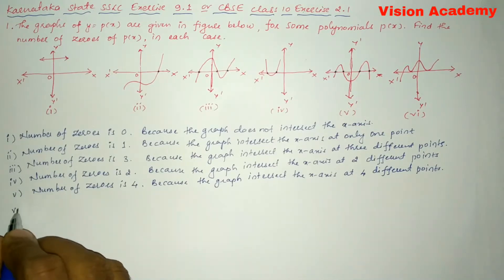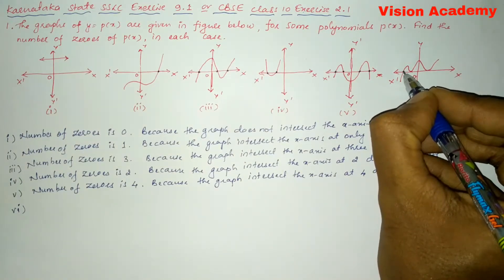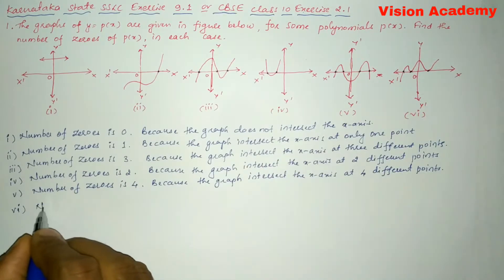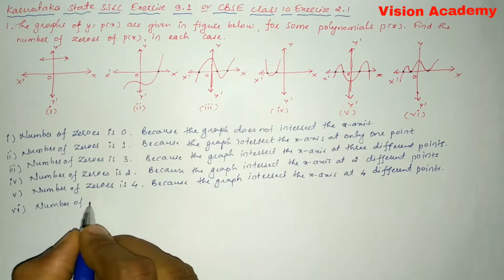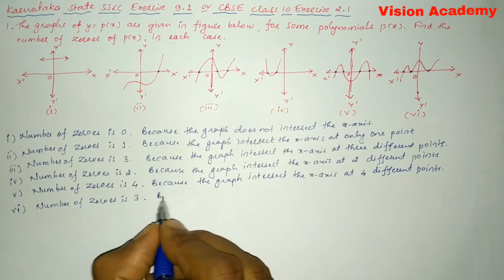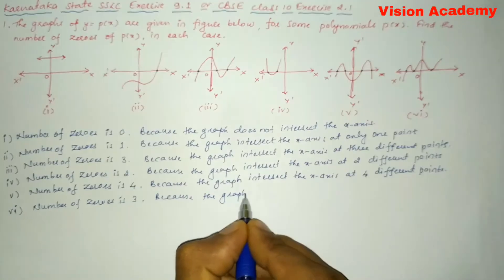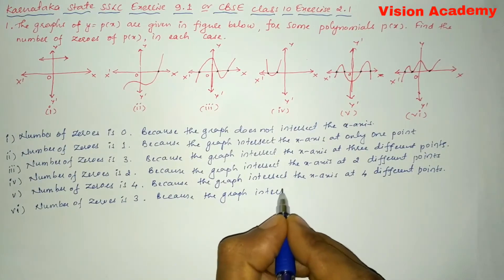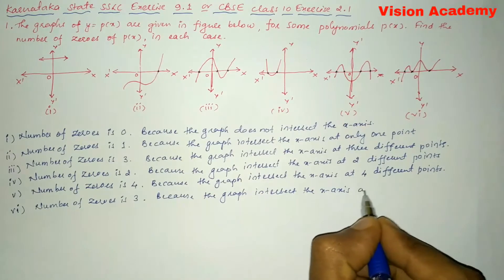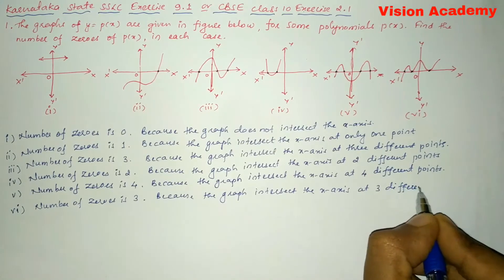Similarly, for Roman number 6. Here you can see the graph is intersecting at points 1, 2, and 3. So we can write the number of zeros is 3, because the graph intersects the x-axis at three different points.